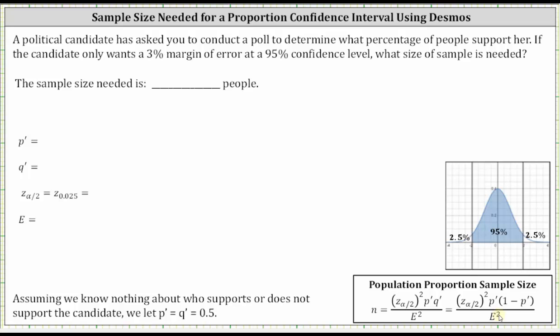This lesson will show how to use Desmos to determine a sample size needed for a proportion confidence interval. A political candidate has asked you to collect a poll to determine what percentage of people support her. If the candidate only wants a 3% margin of error at a 95% confidence level, what size of sample is needed?